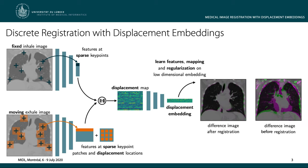Most current work on deep learning-based registration uses U-Net-like architectures to predict dense displacement fields from the input images. We believe that the U-Net architecture itself to some level limits the ability to predict large deformations, and therefore we build on the ideas of the probabilistic dense displacement network, or PDD-Net, that explicitly evaluates the displacement space for a dense grid of points using a correlation layer.